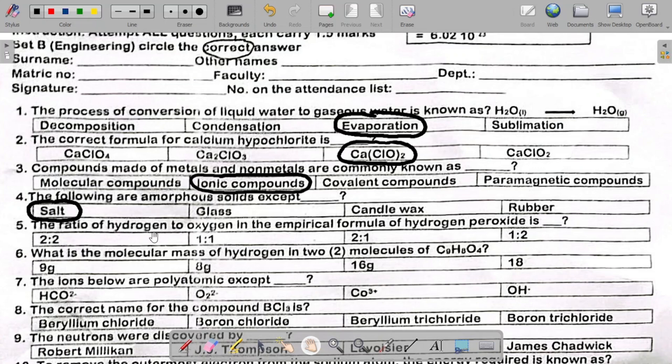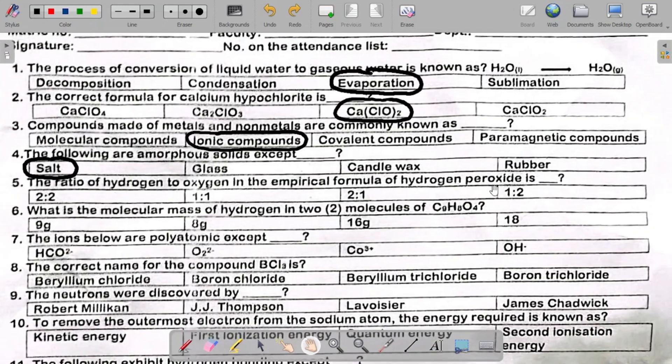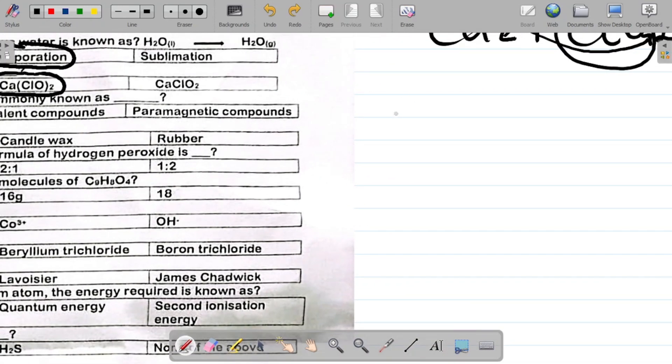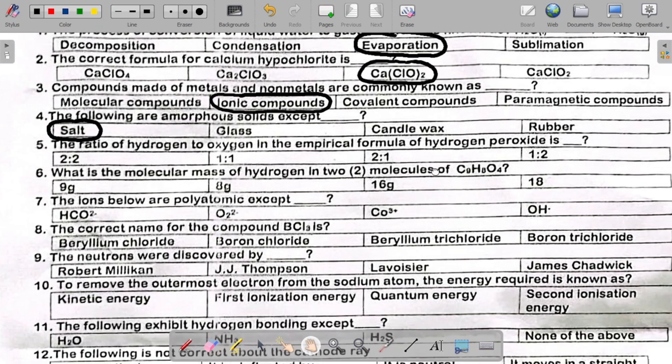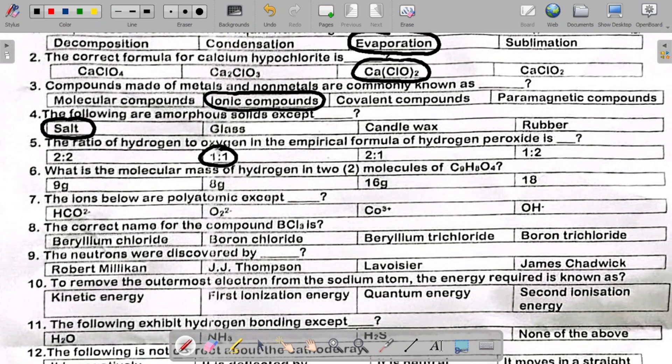Number five says the ratio of hydrogen to oxygen in the empirical formula of hydrogen peroxide is. Notice that the empirical formula of hydrogen peroxide is HO, while the molecular formula is H2O2. You are asked for empirical formula, which is this. So I have one atom of hydrogen as well as one atom of oxygen. My answer here is one is to one. Please do want to increase the quality of your video so that you can see the questions clearer.